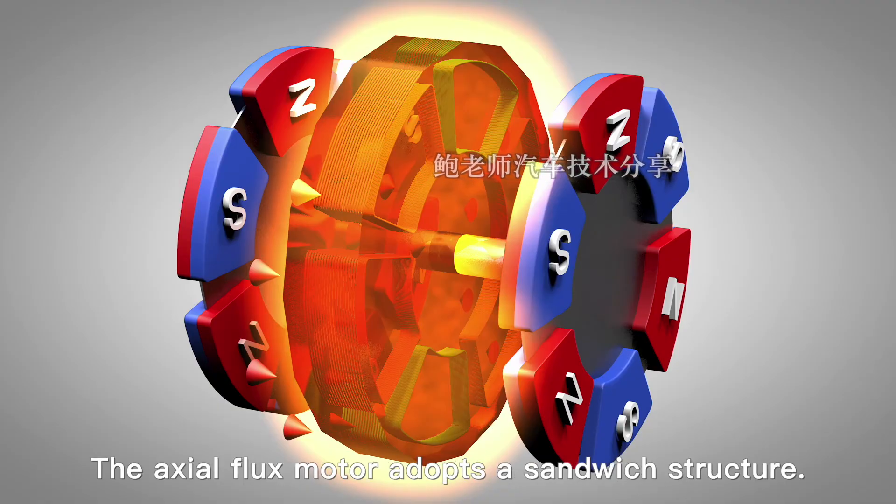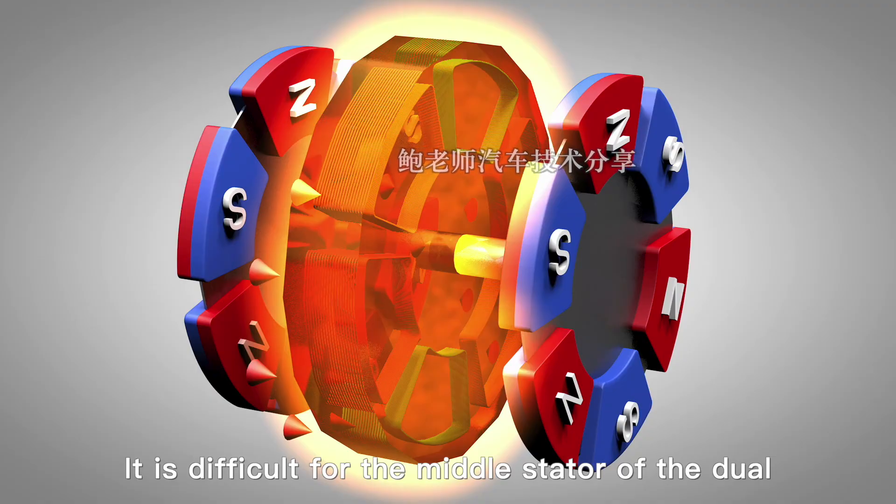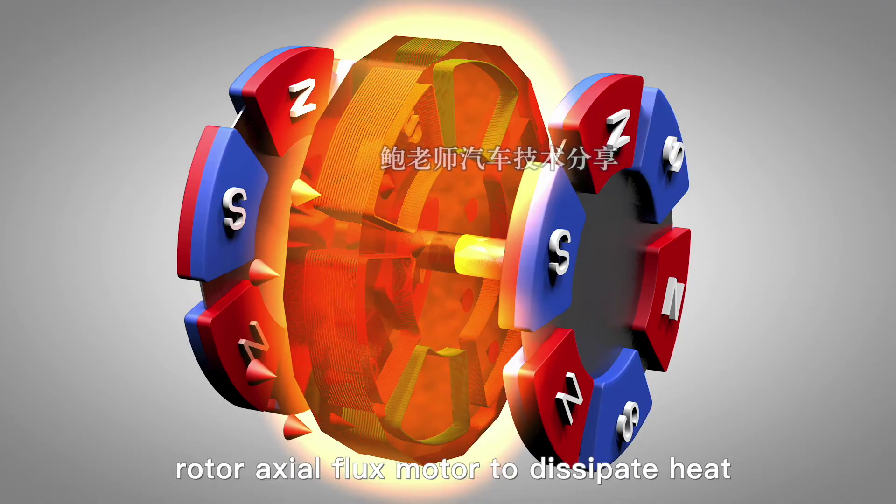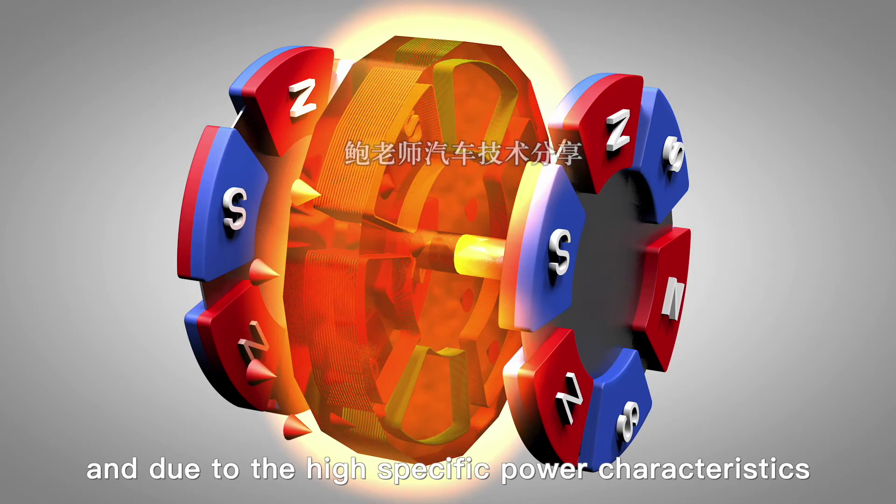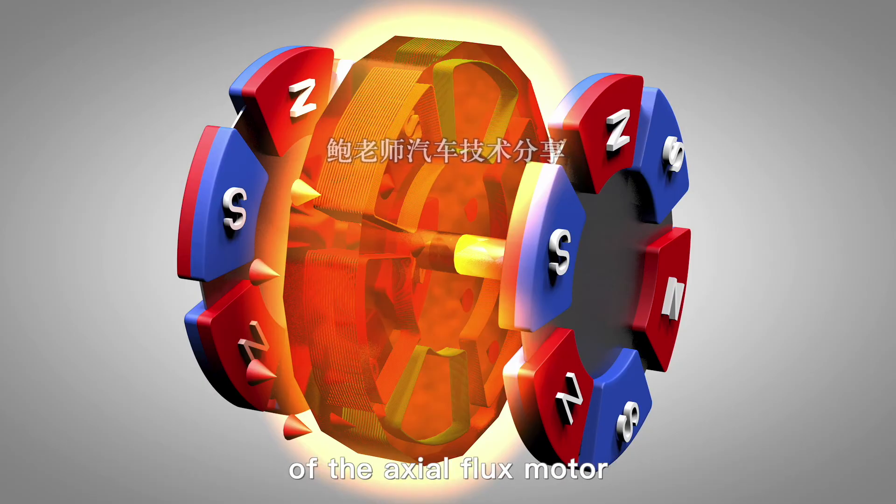The axial flux motor adopts the sandwich structure. It is difficult for the middle stator of the dual-rotor axial flux motor to dissipate heat, and due to the high specific power characteristics of the axial flux motor, the heat capacity is also small, and it faces extremely serious heating problems.